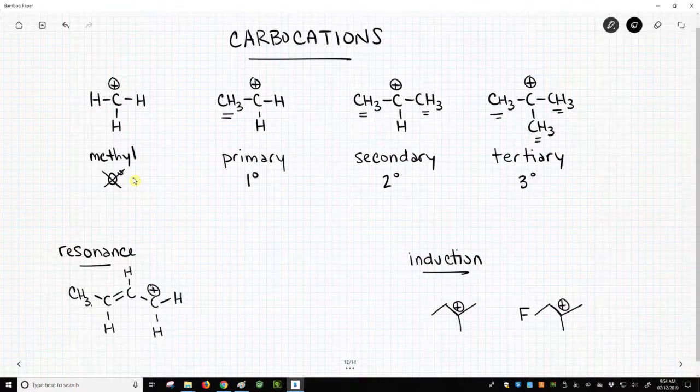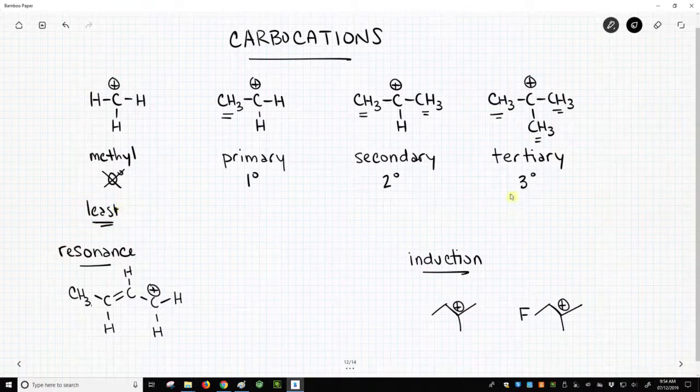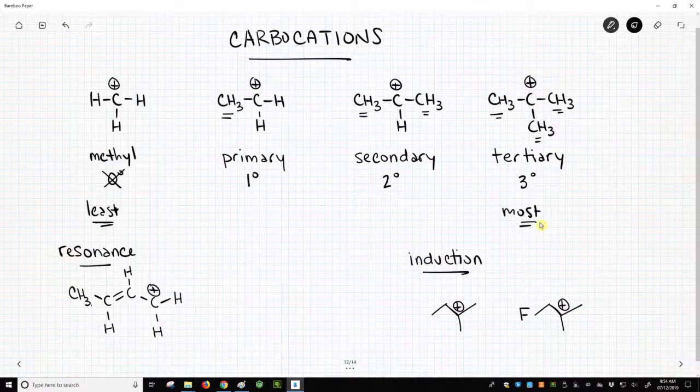These carbocations have a stability trend. The methyl is the least stable of these four. Let's make that T clear. And the tertiary is the most stable of these four, and this goes back to something that we called in a different video hyperconjugation.